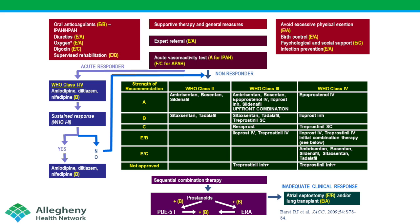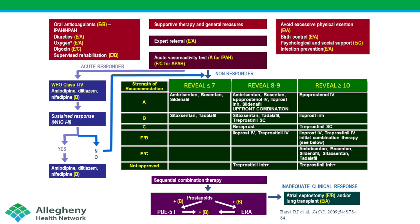Another practical use of the score: prior guidelines based treatment decisions on a singular factor like WHO functional class, which we now know is not the best predictor of risk. We can replace these singular surrogates with scores to more accurately and successfully guide medication choices — with the sickest patients receiving IV prostacyclins and less sick patients receiving mono or dual therapy with oral medications.